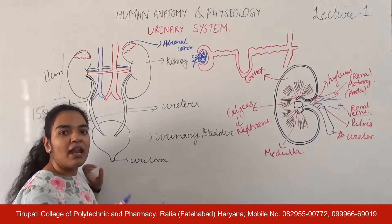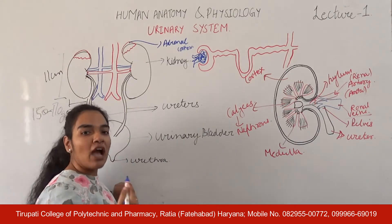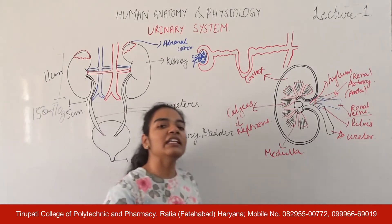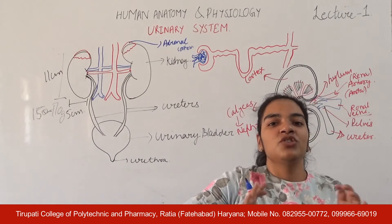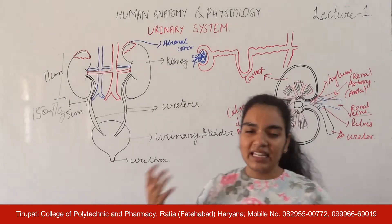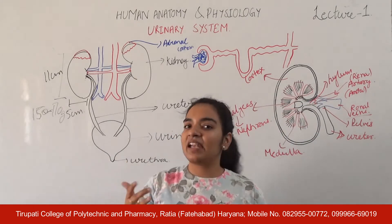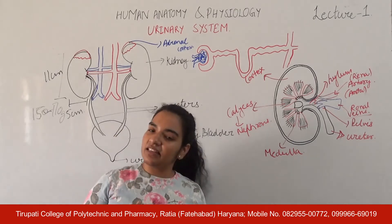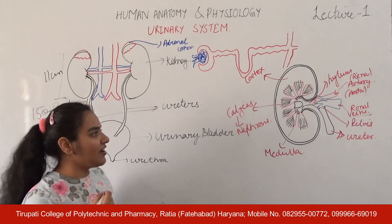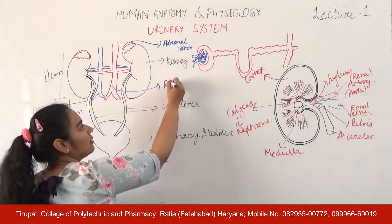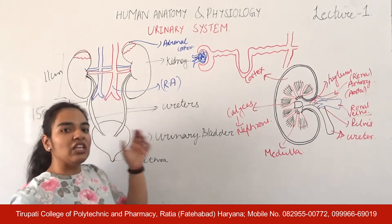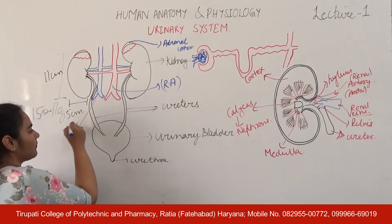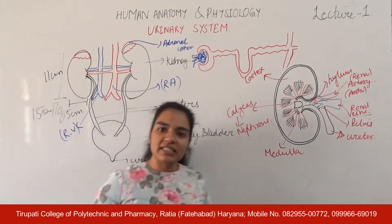The next thing is the blood supply of the kidney. The blood supply of the kidney is through renal veins and renal arteries. The veins and arteries associated with the kidneys are called renal veins and renal arteries. The renal arteries are responsible for the supply of blood to the kidneys, and the renal veins carry the filtered blood away from the kidneys.